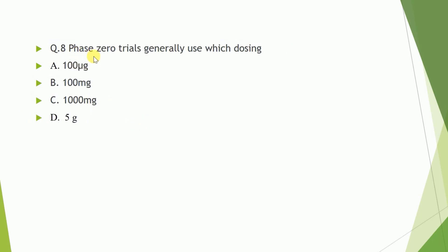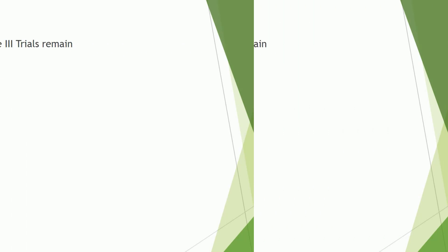Question number eight: phase zero trial generally uses which dosing? I already told you that in phase zero trial, we are using 100 microgram dosing.